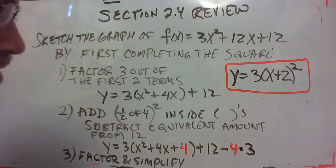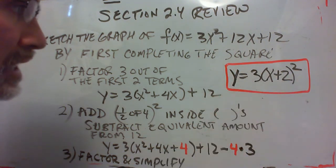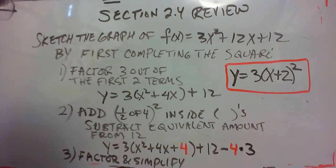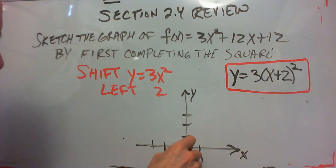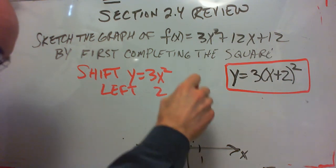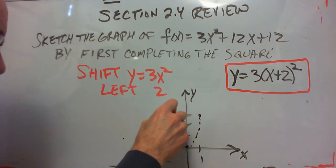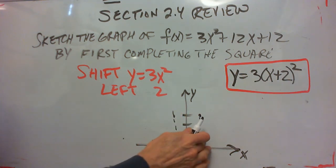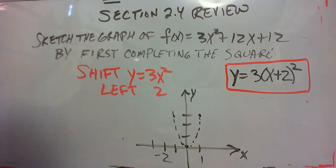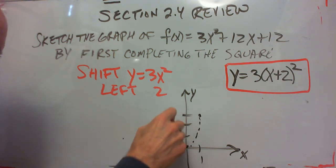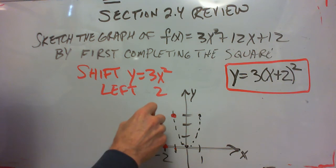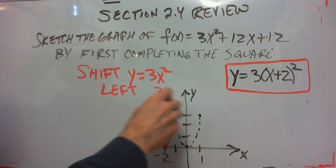Now to graph this, you're going to be taking y equals 3x squared and shifting it left 2. So 3x squared is this parabola like we plotted in the first example, vertically stretched by a factor of 3. We're just shifting this left 2, so the vertex is at negative 2, 0, and we go over 1, up 3, over 1, up 3. And there's our graph of f of x.